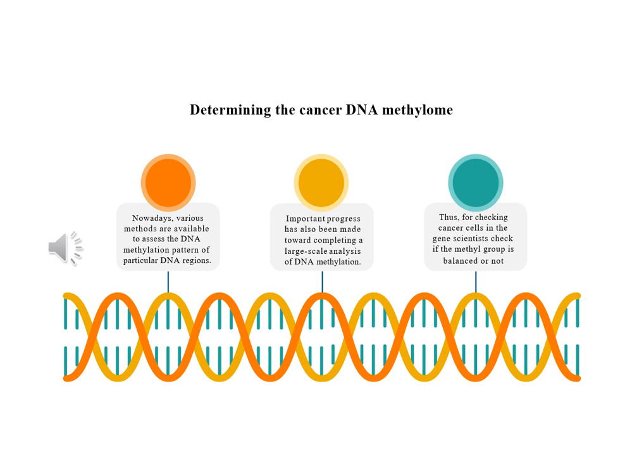Determining the cancer DNA methylation. The importance of DNA methylation alterations in tumorigenesis encourages us to decode the human epigenome. Nowadays, various methods are available to assess the DNA methylation pattern of particular DNA regions, and important progress has been made toward completing a large-scale analysis of DNA methylation. Five methylcytosines can be detected by three possible methods based on bisulfate conversion of DNA. Bisulfate conversion is a method used to distinguish methylated from unmethylated cytosines in genomic DNA at single base resolution.